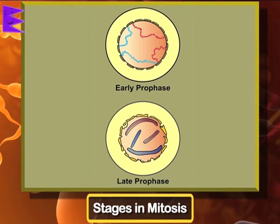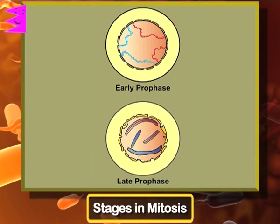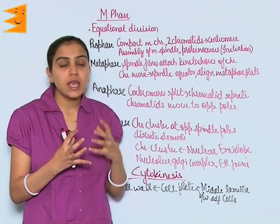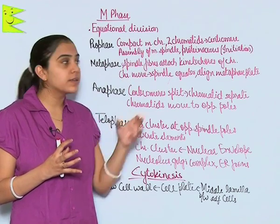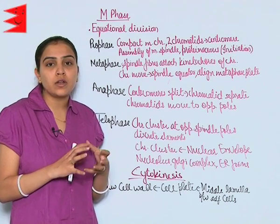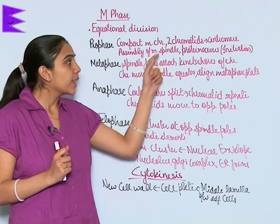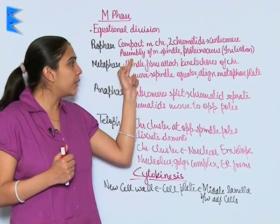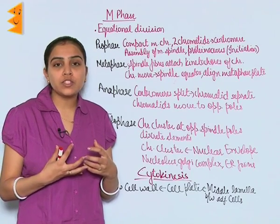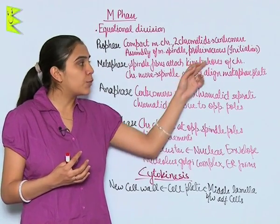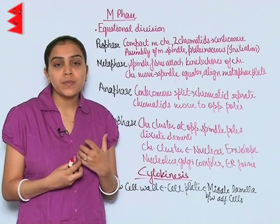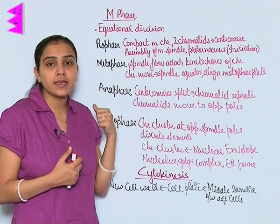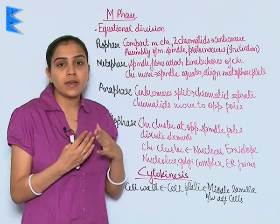Prophase starts with the condensation of chromatin material. When this condensation takes place, it leads to formation of compactly packed chromosomes. Two chromatids so formed get attached to the centromere, and further, initiation of the assembly of spindle fibers begins — proteinaceous components of the cytoplasm start to form.